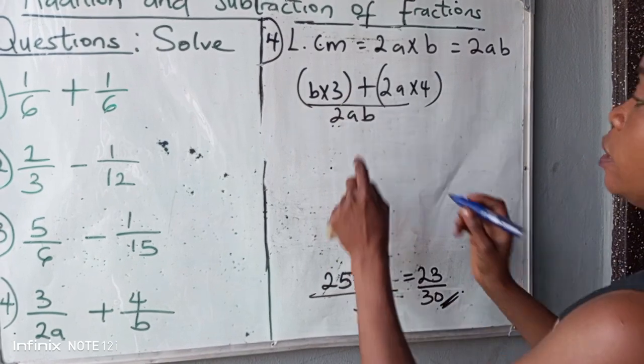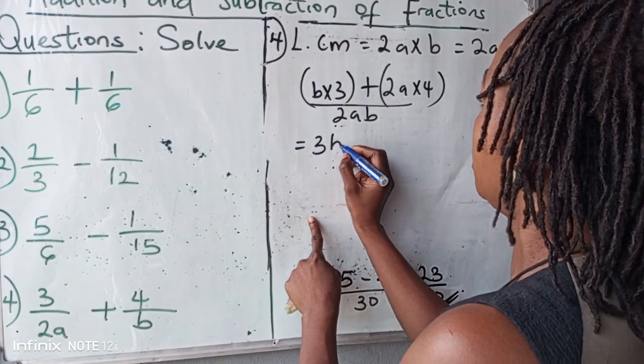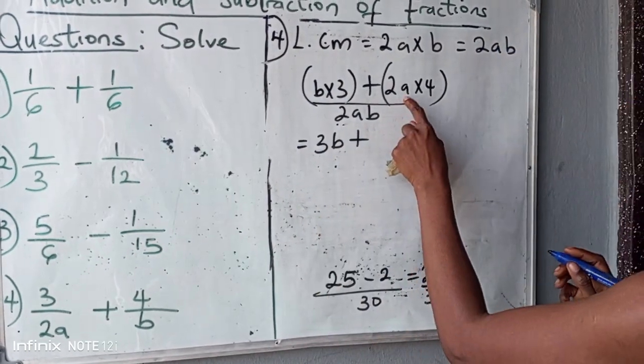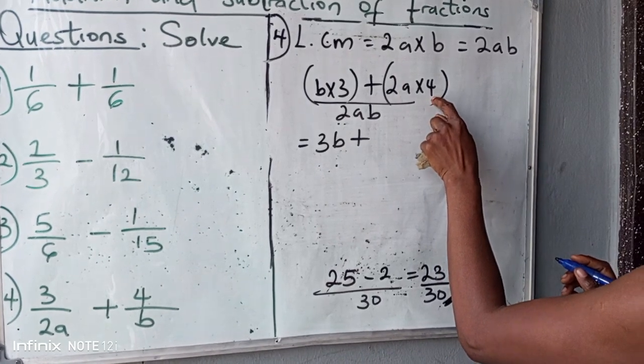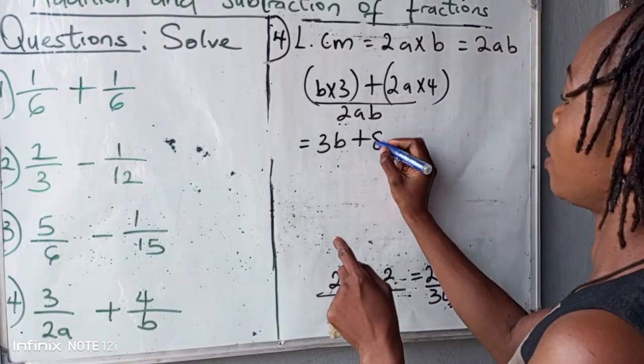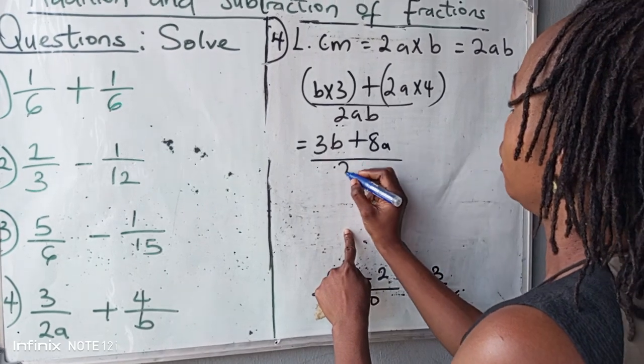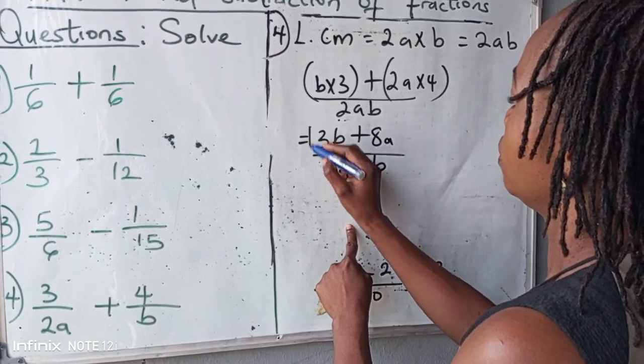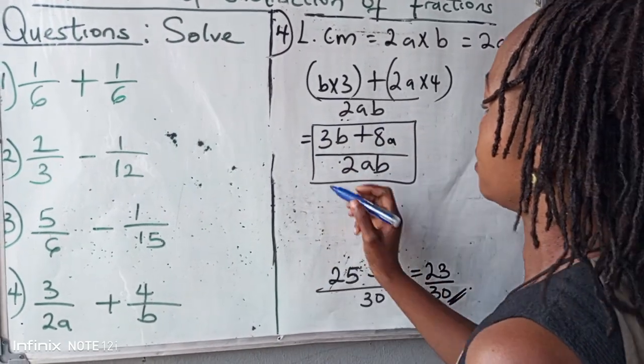B times three equal to three B plus two A times four. Four times two, eight A. All over two A B. This is your final answer.